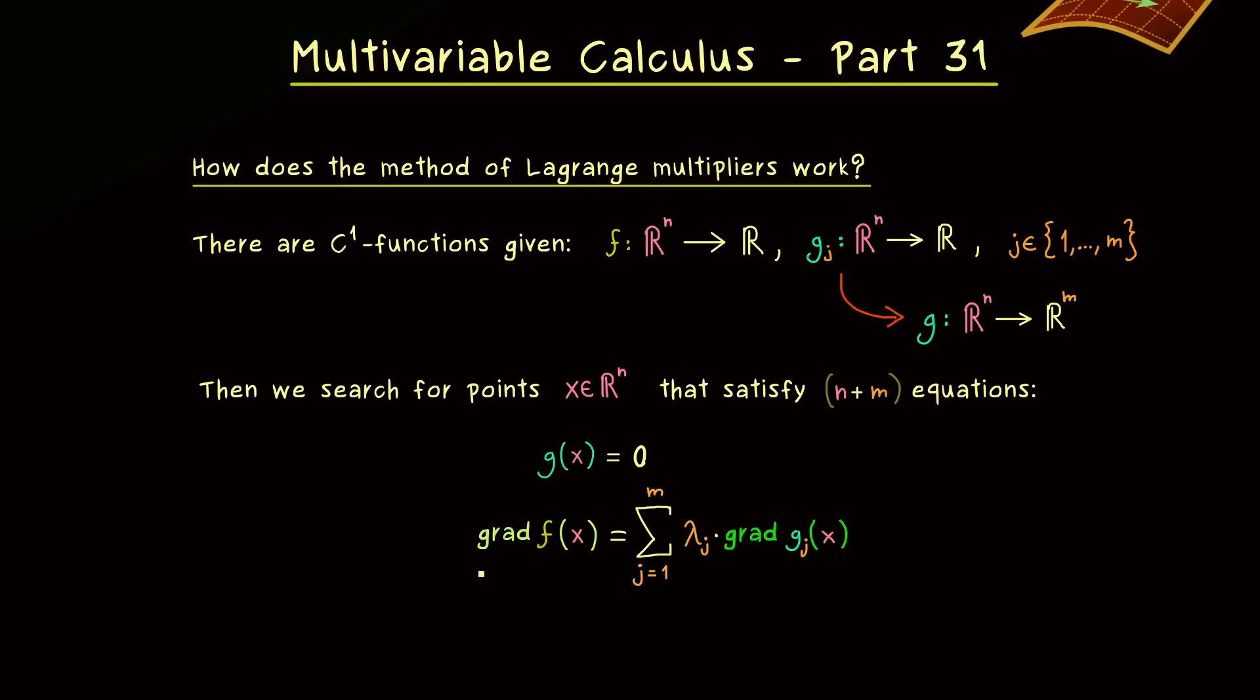On the other hand, as you already know, we have this gradient equation where we also find the Lagrange multipliers. Since the gradient is a vector in ℝⁿ, we have n equations here. To satisfy these equations, we have the freedom to choose m Lagrange multipliers. The solutions x of these equations give us candidates for finding extrema of f under the constraint g(x) equals zero.